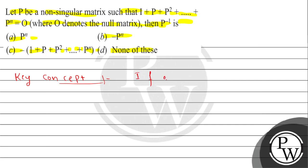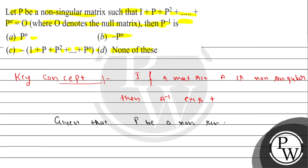What concept do we use? If a matrix A is non-singular, then A inverse exists. Here, P is a non-singular matrix — that is already given.